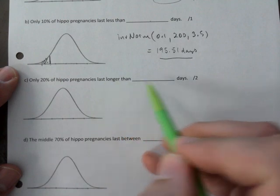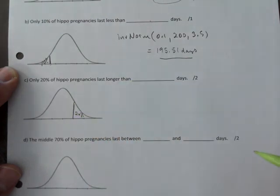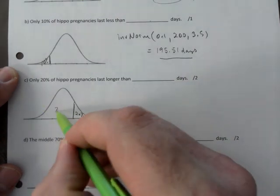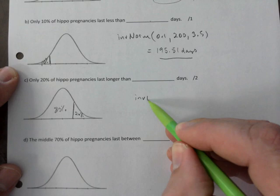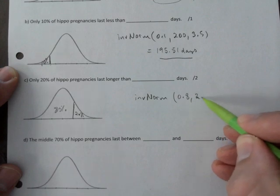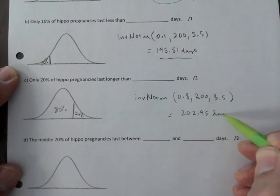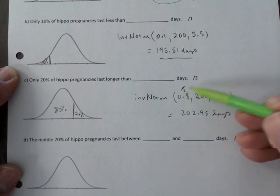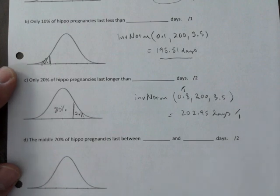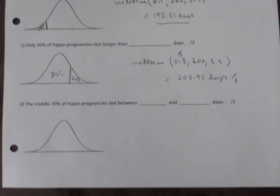Only 20% of hippo pregnancies last longer than a certain amount of days, so 20% would be over here and so that means that this is 80, so I need to see the 80 inside of inverse norm, and it's inverse norm because we are given percentages. This would be 0.8 and then 203.5 and you get 202.95 days. I give you one mark for having the 0.8 and one mark for actually coming up with the answer. If you put 0.2 in here, I would still give you one mark for the fact that you used inverse norm.